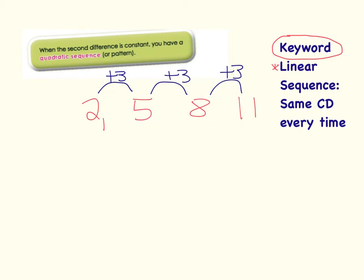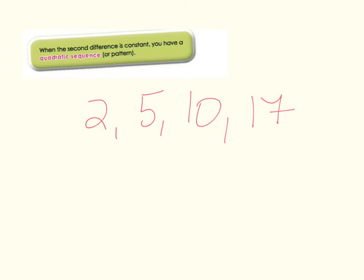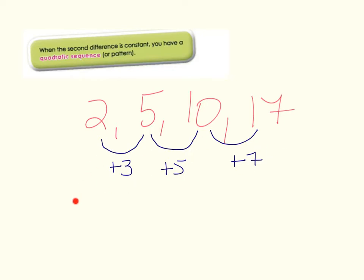But what happens if a sequence is not like this? Here I'm given the sequence 2, 5, 10, 17. Looking at the first differences: between 2 and 5 is plus 3, between 5 and 10 is plus 5, and between 10 and 17 is plus 7. So immediately I can say this is not a linear sequence — the first differences are not the same. But if we look at the second difference: between 3 and 5 is plus 2, and between 5 and 7 is also plus 2.